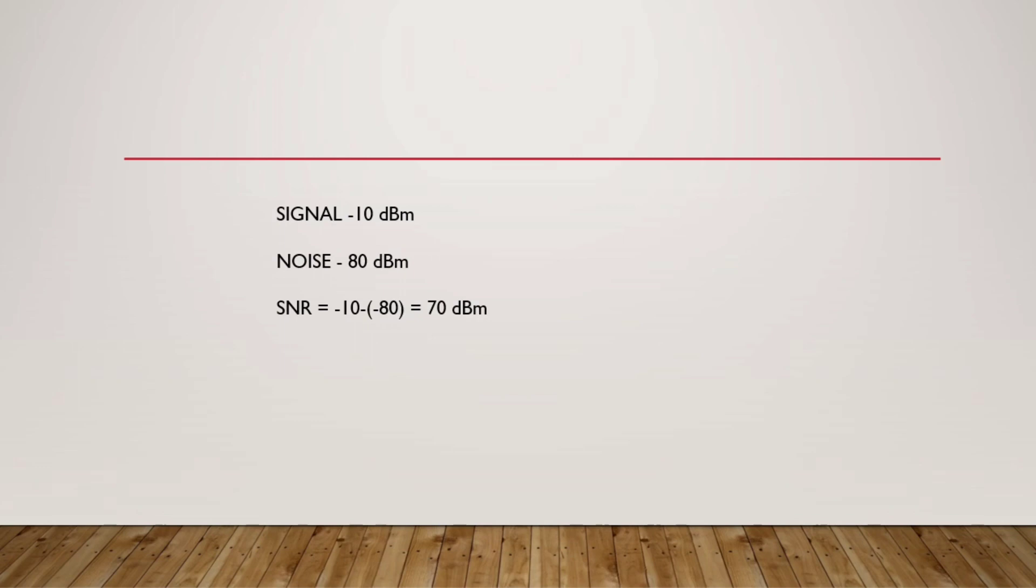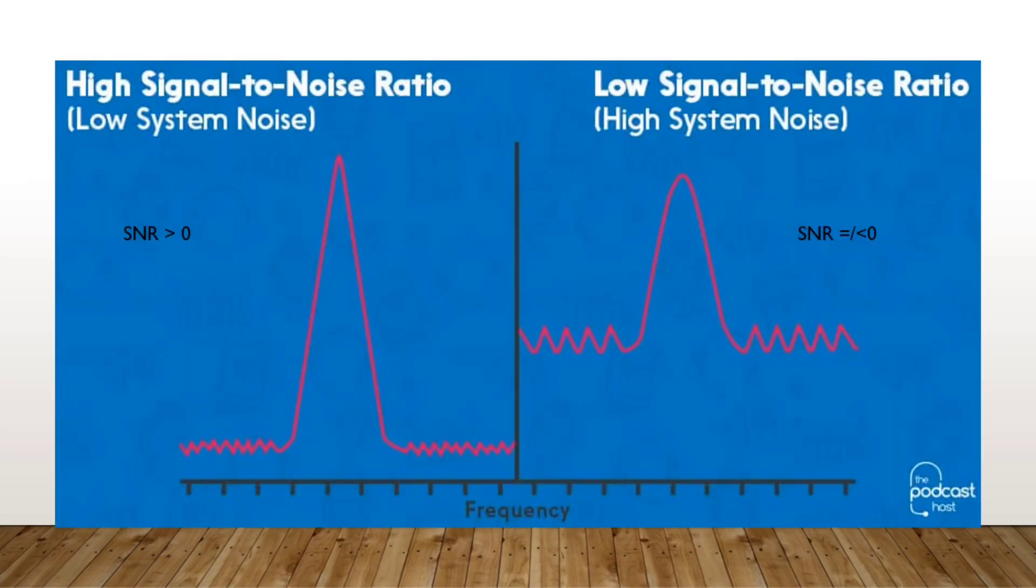We will see in this part an example of low system noise and high system noise difference. As you can see, the left side of the diagram has a low noise floor and a high signal. So if you recall the part where we talked about how to deduce the SNR, you will understand that in the low system noise part, the SNR will be greater than zero.